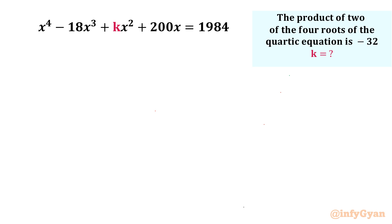Welcome to Infigyan friends. In this very exciting video on algebraic challenging equations, we are going to solve one very interesting problem from SMO 2012. A quartic equation x⁴ minus 18x³ plus kx² plus 200x equals 1984 is given to us. The product of two of the four roots of this quartic equation is minus 32. We have to find out the coefficient of x², that is k.